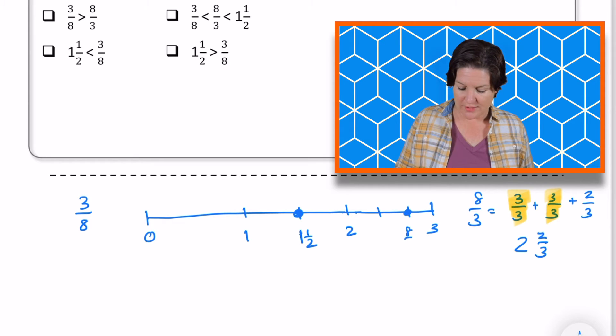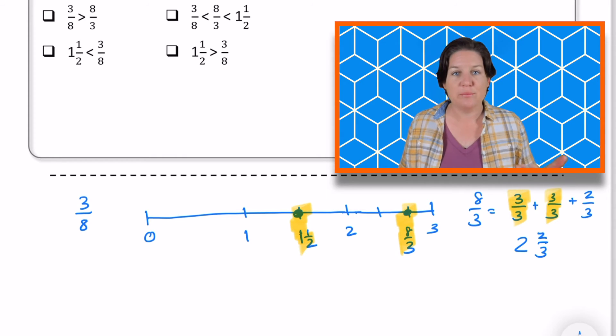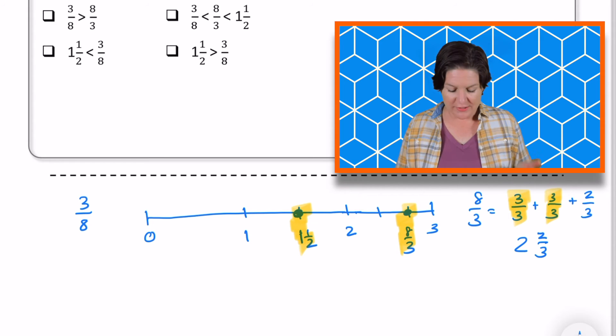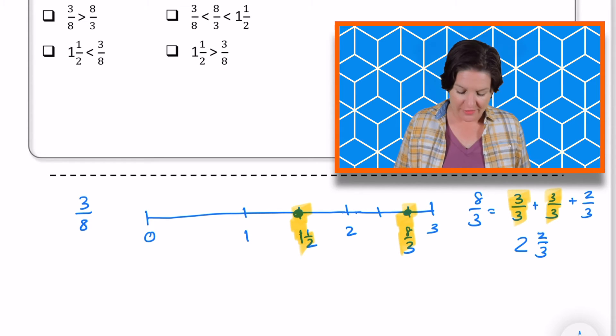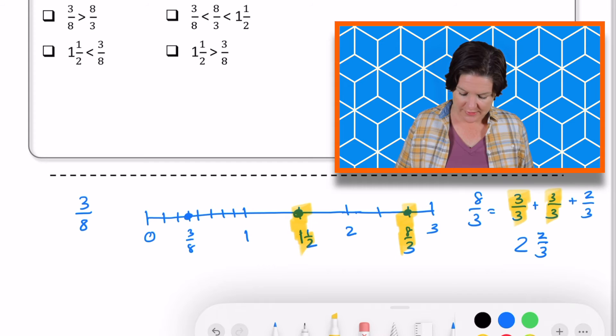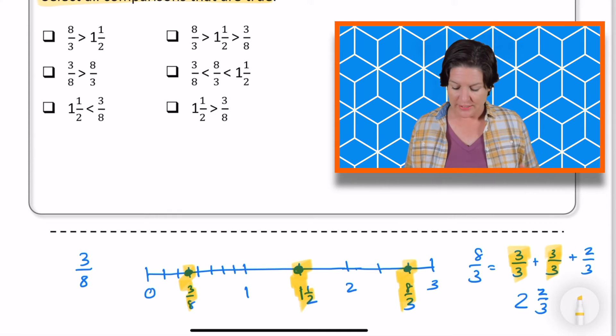That's two and two thirds, which is the same thing as eight thirds. So we have one and a half, we have eight thirds right there. And you know what, I'm going to go ahead and put on my three eighths just in case. So I know that in between zero and one, I need to break that into eights. So first I'll break it into half and then break it into eight equal parts and three eighths would be right here.